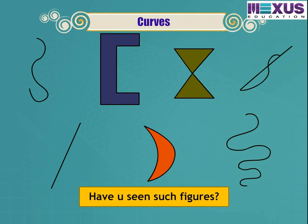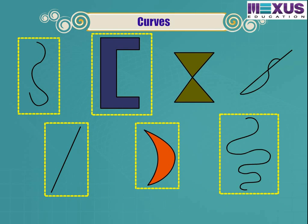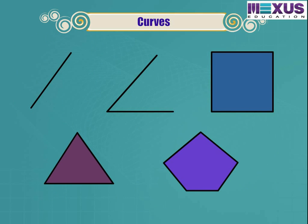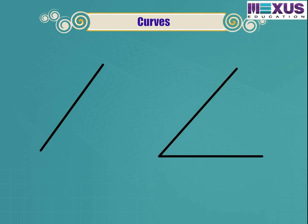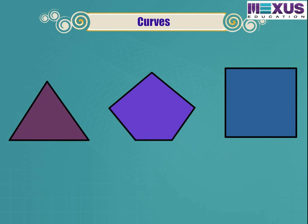Have you seen such figures? These are called curves. The curves which do not overlap each other or intersect at any point are called simple curves. Some of the curves are made of straight lines. Some curves are open — they are called simple open curves — while some are closed and they are called simple closed curves.